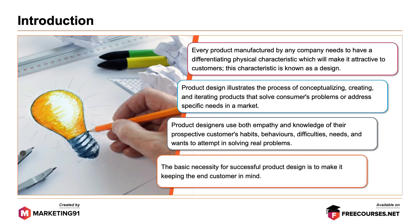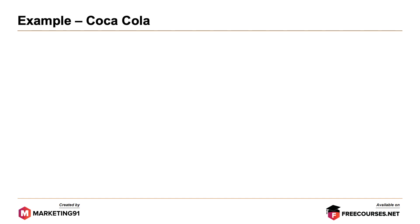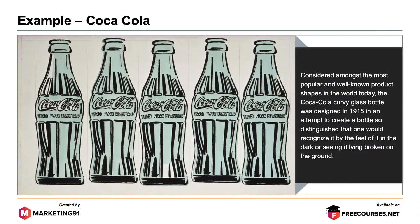The basic necessity for successful product design is to make it keeping in mind the end customer. For example, the Coca-Cola bottle — considered amongst the most popular and well-known product shapes in the world today, the Coca-Cola curvy glass bottle was designed in 1915 to create a bottle so distinguished that one could recognize it by the feel of it in the dark or seeing it lying broken on the ground.